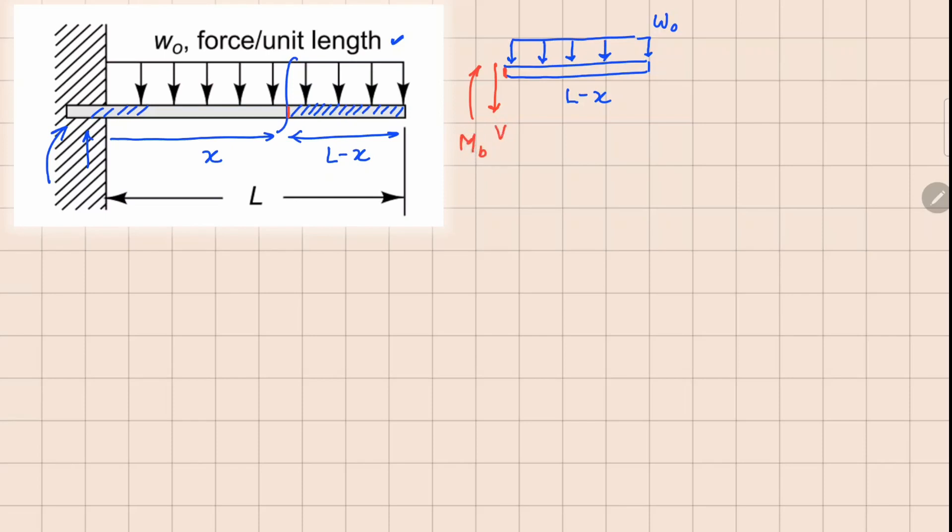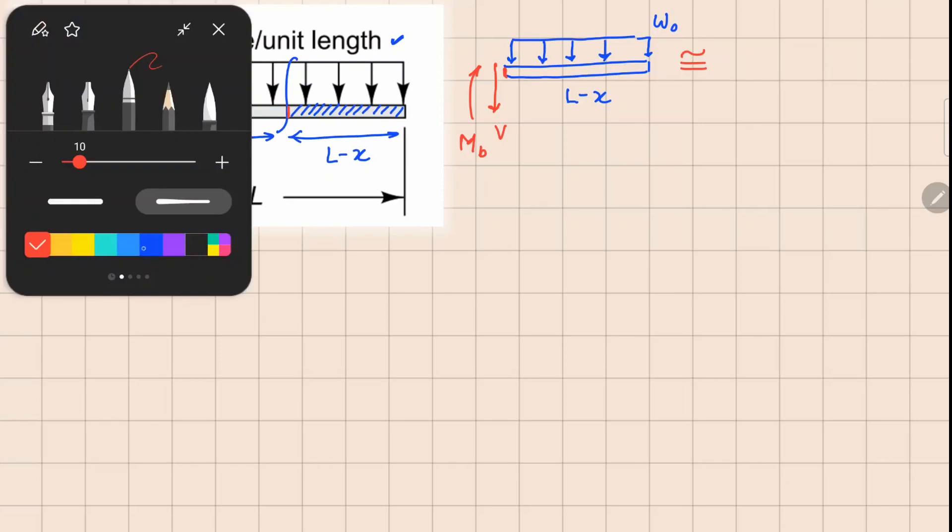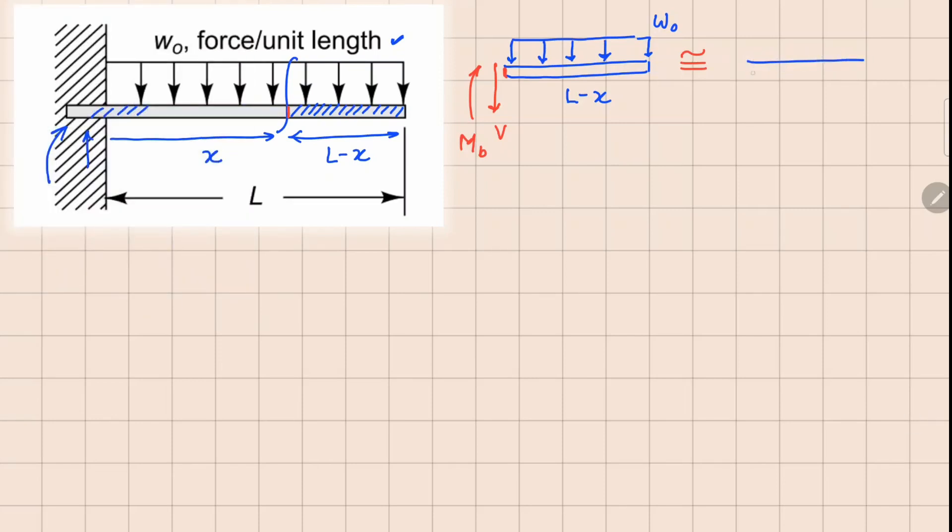I can draw an equivalent diagram for this. So let's draw that beam, this is your V and M_b. Now this uniform distributed load can be replaced by a point load by multiplying this and the distance at which this is acting, so w_0 times L minus x right there.